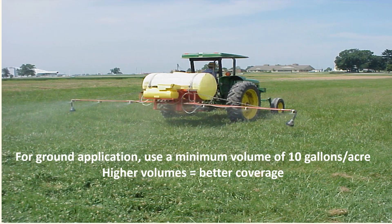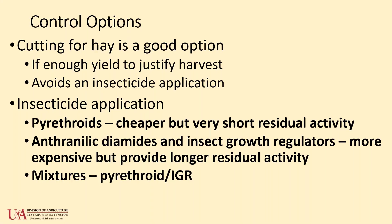We also tell growers to use a minimum of 10 gallons per acre to get good coverage and get the insecticide down into the duff where armyworms are living. If grass is tall enough to cut, mowing is a good option to avoid an insecticide application. For product choices, pyrethroids are cheaper but have very short residual activity, and we've seen control issues with them. Anthranilic diamides like Prevathon, Vantacor, and Besiege, and insect growth regulators, give much longer residual activity.